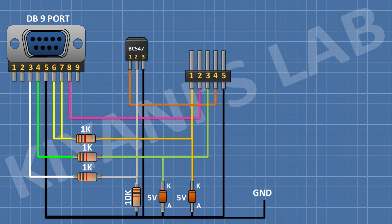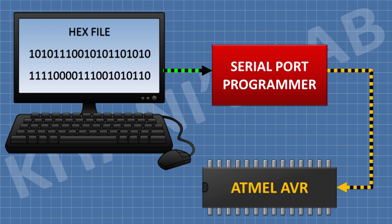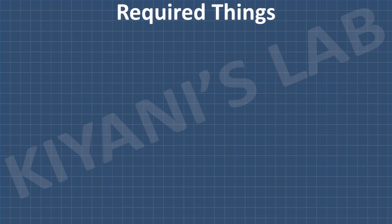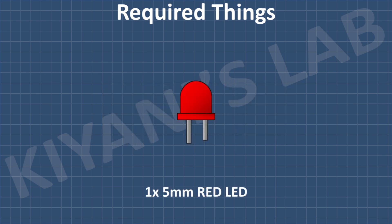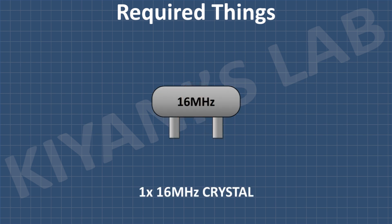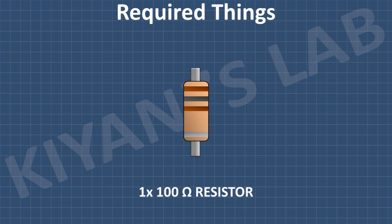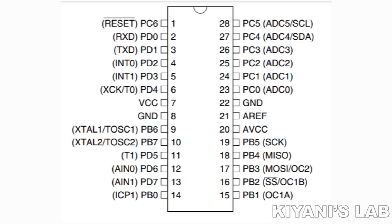We have completed all the connections. Now let's program an AVR microcontroller with this programmer. I'm going to program an ATmega8 AVR microcontroller. To program this microcontroller we need to connect a few passive components. First, we need to know the pin configuration of the microcontroller, which we can find in its datasheet.